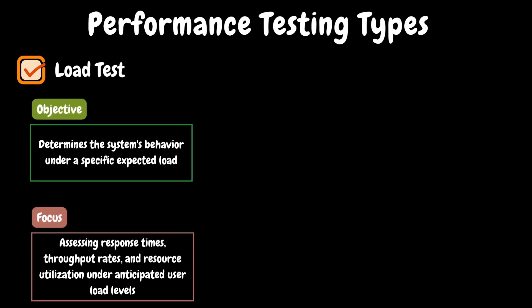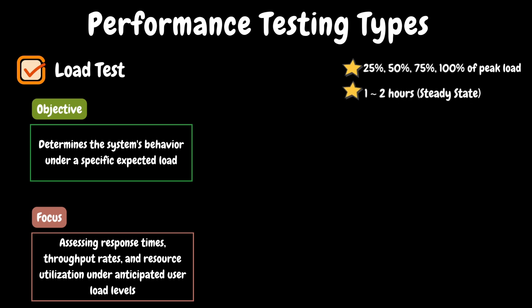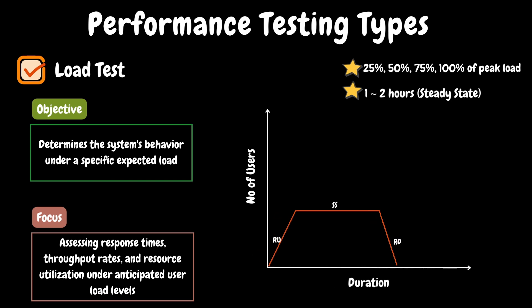The second test on our list is the load test, also called the peak load test. After the sanity or dry run, we will schedule this test in every project — it is a kind of mandatory test. The objective is to validate the system's behavior under a specific load, focusing on application response time, throughput rates, and resource utilization of the server. If there is a severe deviation from the performance testing requirements, the test will be stopped and teams will investigate the root cause. In general, we will execute two rounds of tests with the same volumes to understand consistency. This test will be executed with 100% of peak load and it is best practice to conduct it for a two-hour steady state. RU means ramp up, SS means steady state, and RD means ramp down.